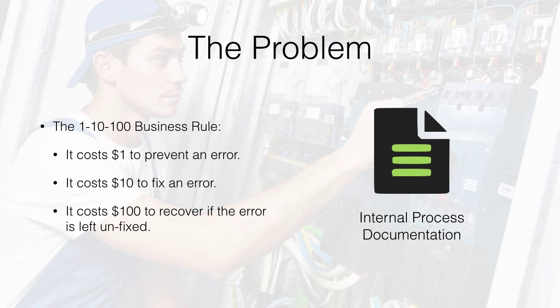As many businesses know, the 1-10-100 business rule illustrates that while it costs only a dollar to prevent an error, it will cost 10 times that amount to fix it. If left unfixed, the cost will increase 100 times the original amount. Avoiding problems directly impacts the bottom line.